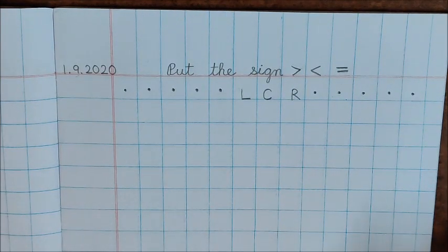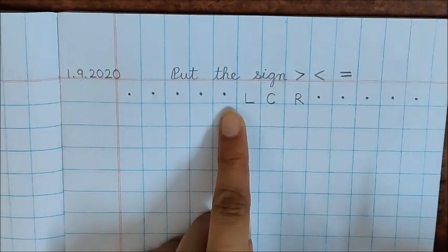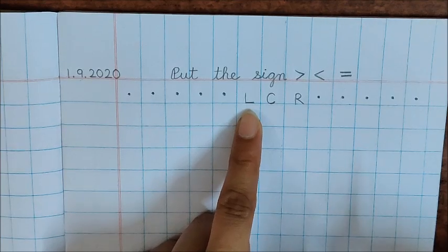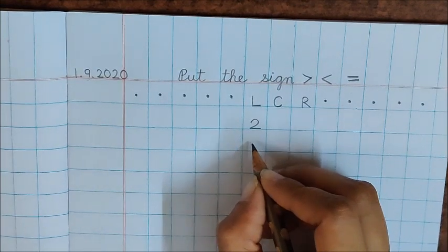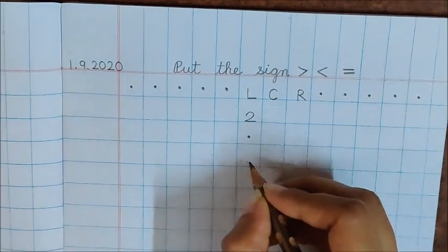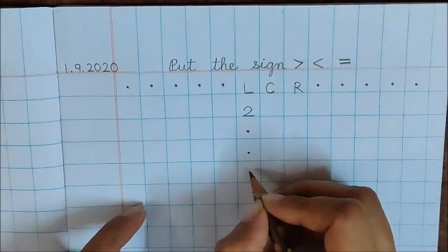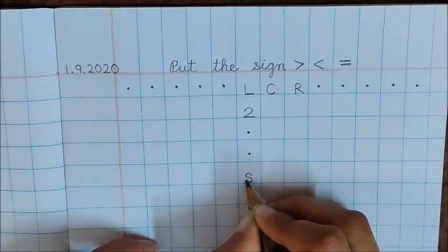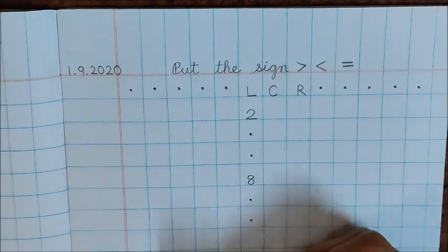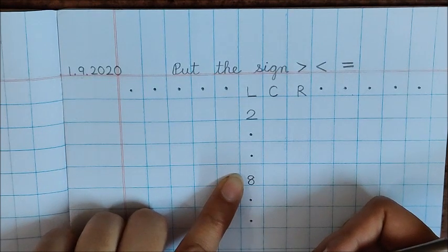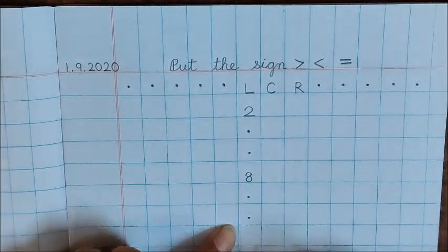Now, children, below L. L, left side. Below L, children, write down 2. Now, below 2, put a dot here. Dot. Again put a dot. Below this dot, write 8. Again put a dot. One more dot. See, children, below each number, we are putting 2 dots. 1, 2. Now, below this dot, write number 4.